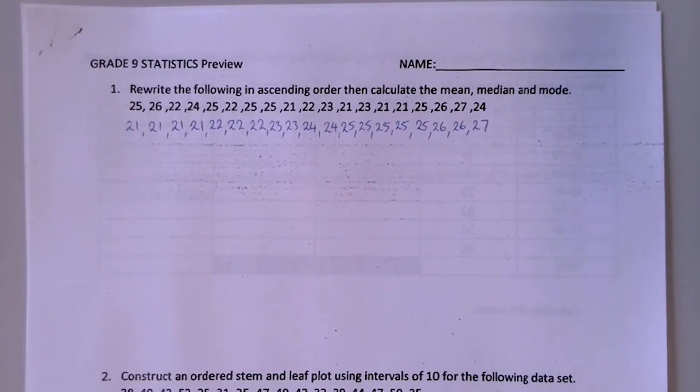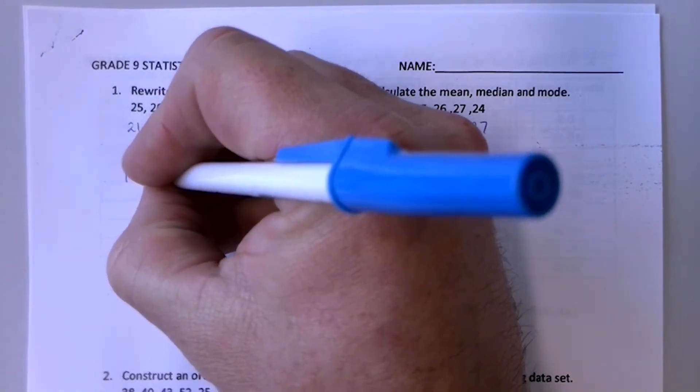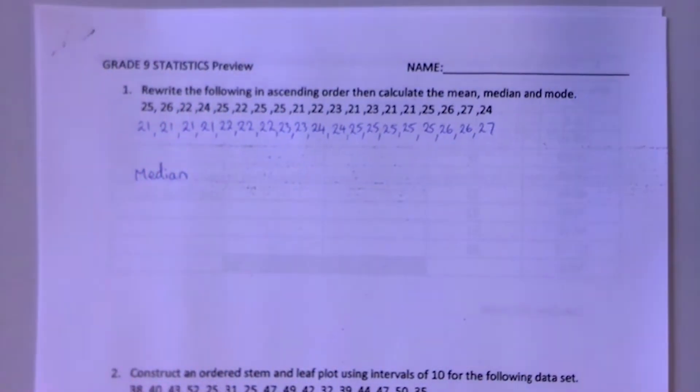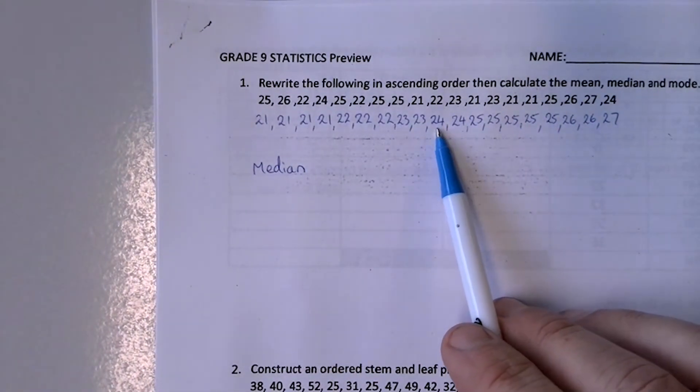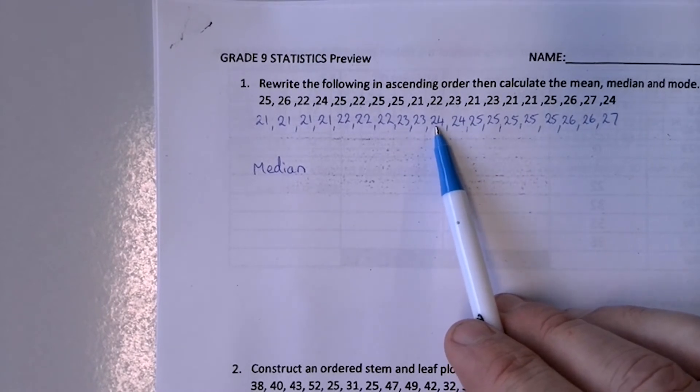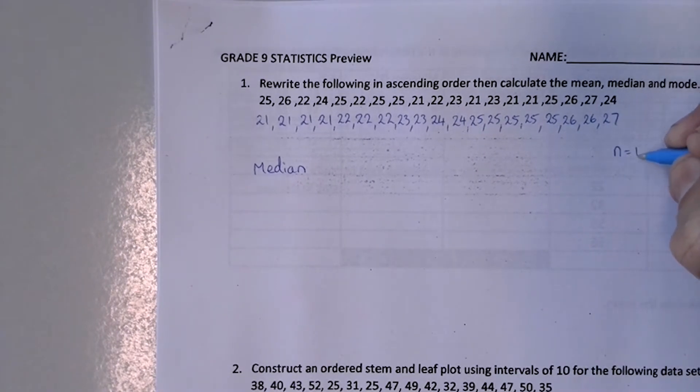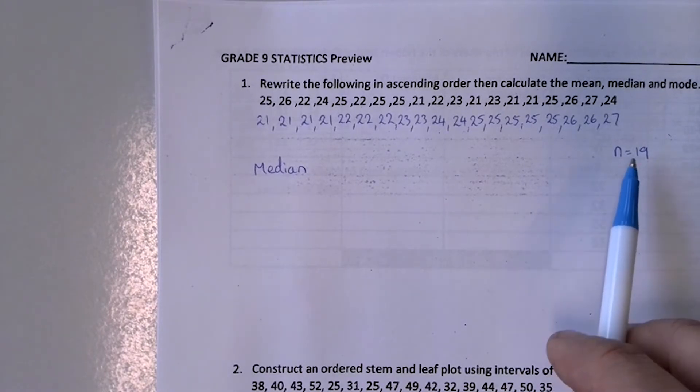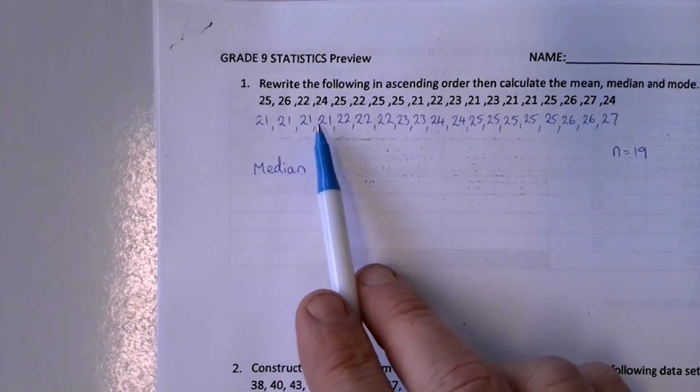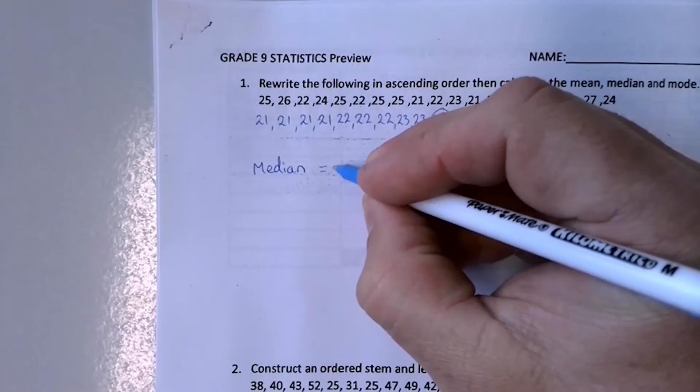But when you go to solve these, what we'll do is we will calculate the median first. So the median is the middle score. So if we arrange them like this from smallest through the biggest, it's going to be the middle score, which is going to be about here somewhere. So what you need to do is you need to count through and decide how many scores you've got. In this case, we've got 19 scores. And that means that the middle score is going to be the 10th score. So you count on 1, 2, 3, 4, 5, 6, 7, 8, 9, 10. So this is the median score. So the median will be 24.